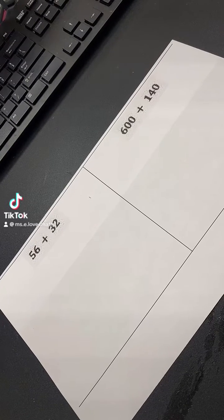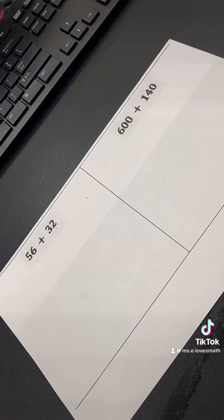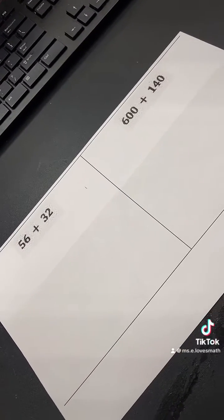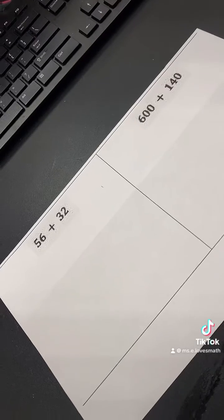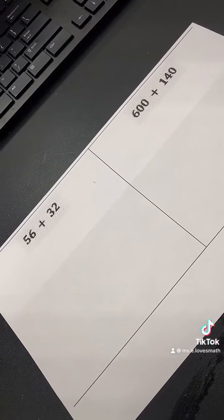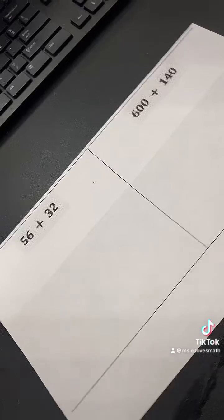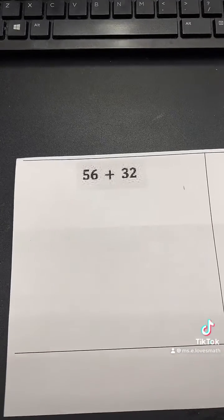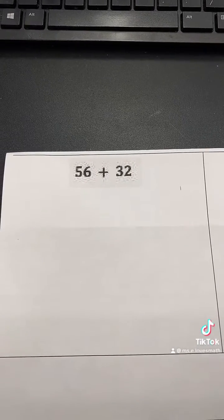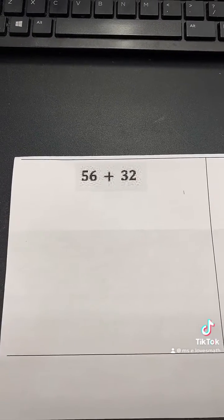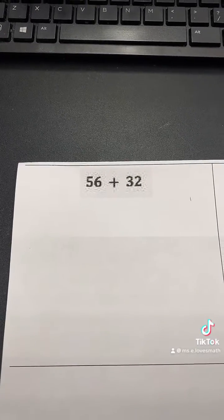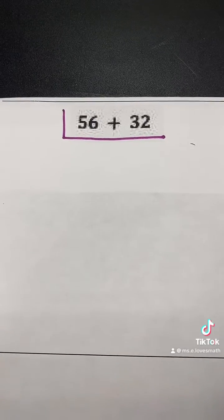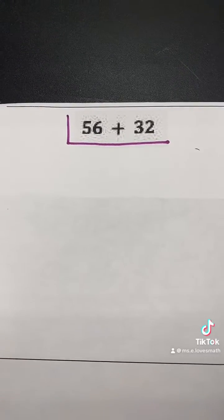Now we're going to use the GCF and the distributive property to rewrite these expressions, and we're going to put the parentheses back. So in the last videos, we took the parentheses out and wrote expressions that looked like this. Now we have these expressions where we want to take and find the GCF, and we want to rewrite it so that the parentheses are back and the GCF is visible. So we're going to find the GCF using our ladder method, just like we did a few videos ago.